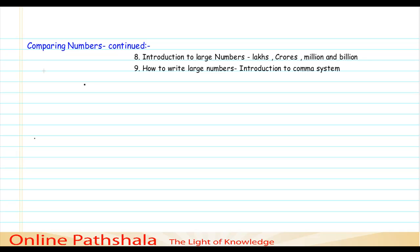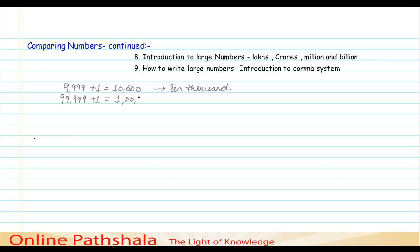We already know the number 9,999. If I add one to this number I get 10,000, which is the smallest five-digit number. Moving ahead, if I have the number 99,999 and add one to it, I get the smallest six-digit number, which is known as one lakh.